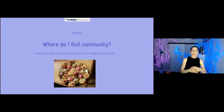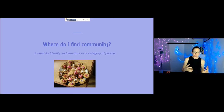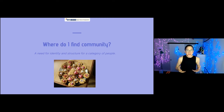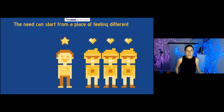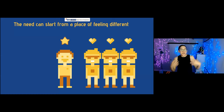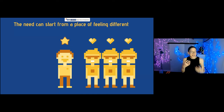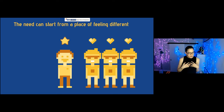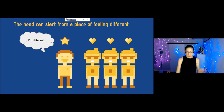The next kind of community cookie is one based on a need for identity and structure for a category of people. I can look at these Valentine's cookies — they look delicious. This need can start from a place of feeling different. You're in a scenario and it's like one of these things is not like the other, and then it's like, oh my God, it's me. I'm the other, and I'm different, and this is a problem.